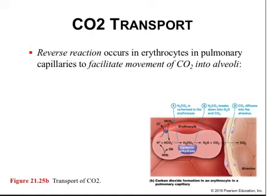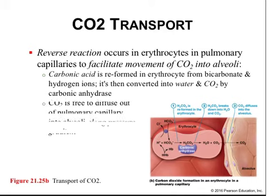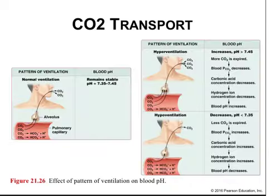The reverse reaction occurs in erythrocytes in the pulmonary capillaries to facilitate the movement of CO2 into the alveoli. Carbonic acid is reformed in erythrocytes from bicarbonate and hydrogen ions, then converted into water and CO2 by carbonic anhydrase. The CO2 diffuses out of the pulmonary capillaries into the alveoli down its pressure gradient, and is then blown out when we exhale.